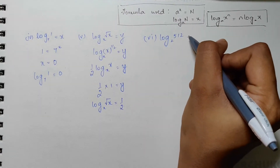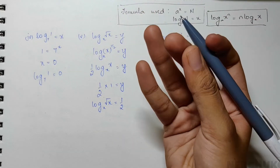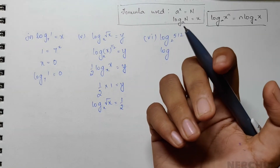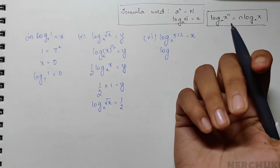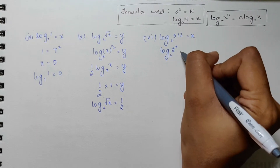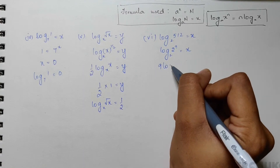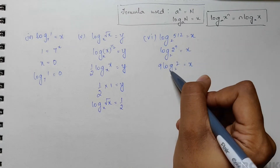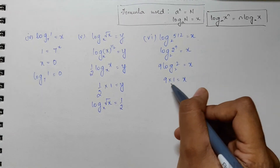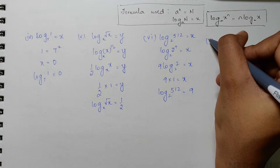For the sixth bit we have log 512 to base 2; let this equal x. Now 512 is 2 to the power 9, since 2×2=4, 4×2=8, 8×2=16, 16×2=32, 32×2=64, 64×2=128, 128×2=256, and 256×2=512. So we have log of 2 to the power 9 to base 2 equals x. Applying the power formula, 9 times log 2 to base 2 equals x, and since log 2 to base 2 is 1, x equals 9. Therefore log 512 to base 2 equals 9.